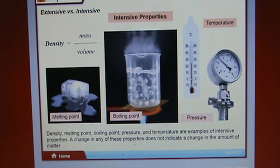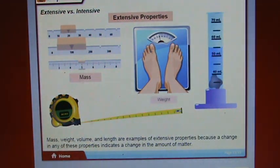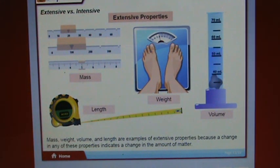Density, melting point, boiling point, pressure, and temperature are examples of intensive properties. A change in any of these does not indicate a change in the amount of matter. Mass, weight, volume, and length are examples of extensive properties because a change in any of these indicates a change in the amount of matter.